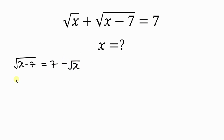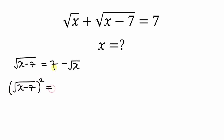Our next step will be to square both sides in order to get rid of this square root. So we have on the left the square root of x minus 7 — squaring the left-hand side. This is equal to, on the right-hand side, 7 minus the square root of x, which we also square.